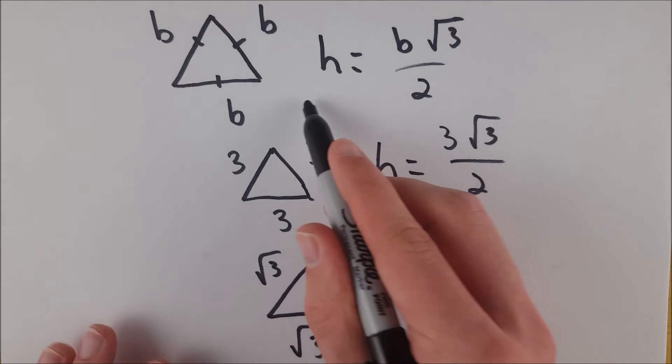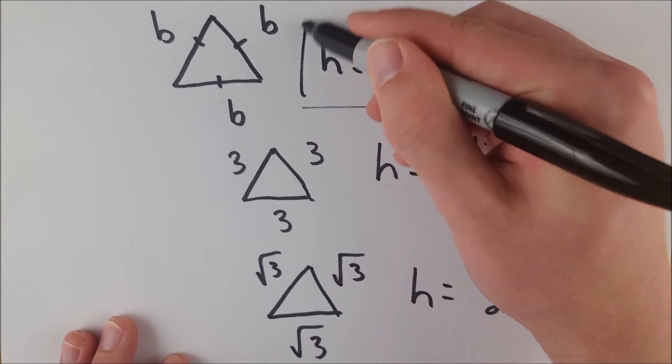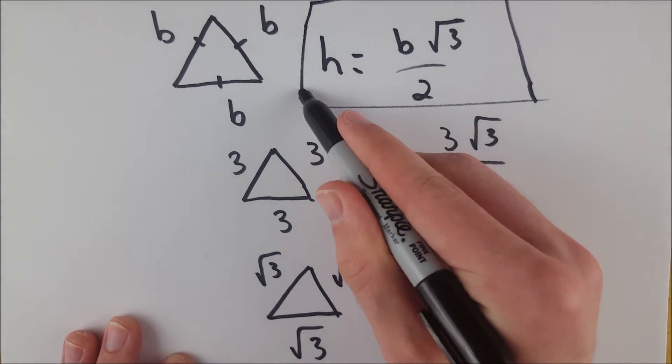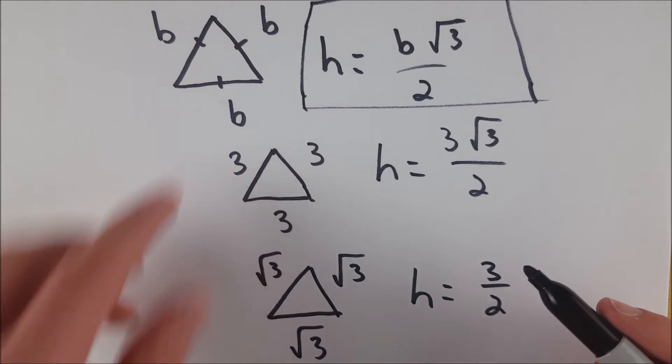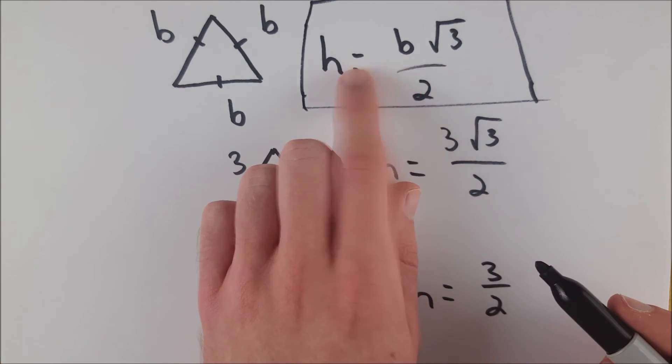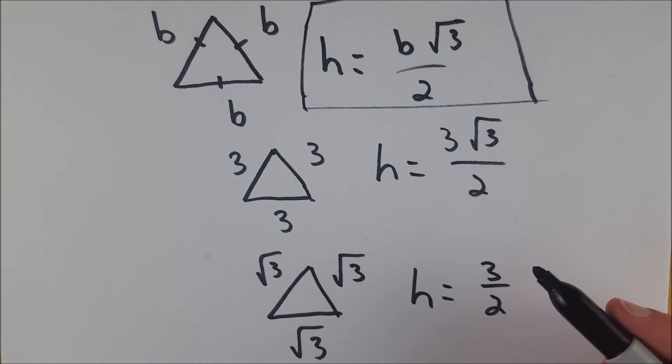So this is the formula for the height of an equilateral triangle. Real handy because you don't need to use the Pythagorean theorem to find its height.